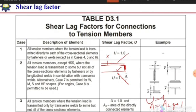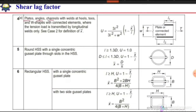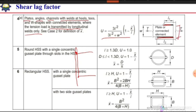Next is for plates, angles, channels with welds at the heels, T's and W shapes with connected elements, where the tension load is transmitted by longitudinal weld only. If we have a channel section connected to a plate by longitudinal welds, we use a specific formula to calculate the shear lag factor. Here, W is the distance between the two welds, L is the average of L1 plus L2, and x-bar is the distance from the centroid of the member to the load transfer plane.